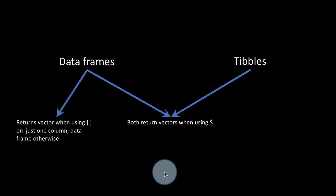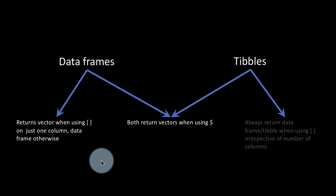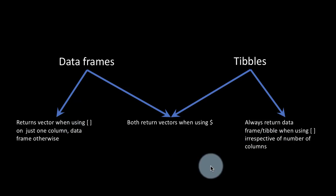But when you're using the square bracket operator with a data frame, if you're extracting only one column you get a vector. If you're extracting more than one column, you get a data frame. With tibbles, you always get a data frame whether using the square bracket operator. Whether you're extracting one column or multiple columns, it doesn't matter. It's always a data frame. So there's a greater amount of consistency with tibbles than with data frames.